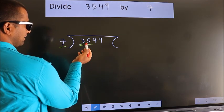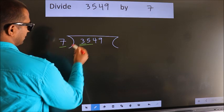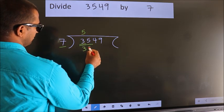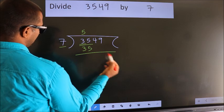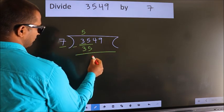When do we get 35? In 7 table. 7 fives, 35. Now we should subtract. We get 0.